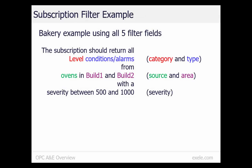Let's look at an example filter for our bakery using all five filter fields. The subscription should return all level condition alarms from ovens in building 1 and 2 with a severity between 500 and 1,000. Level is our category, the type of event is a condition event, the source is ovens, the allowed areas are building 1 and building 2, and 500 to 1,000 is our allowed severity range.